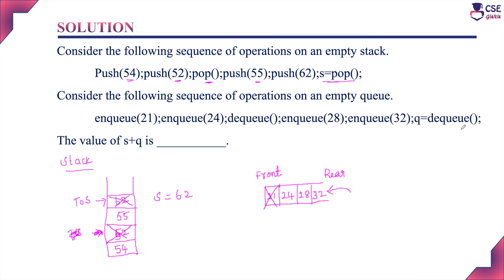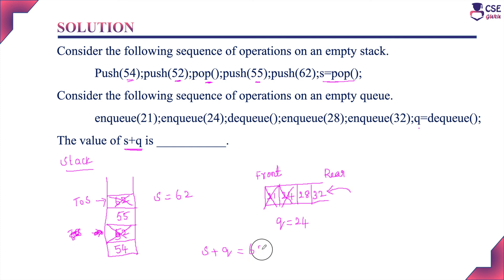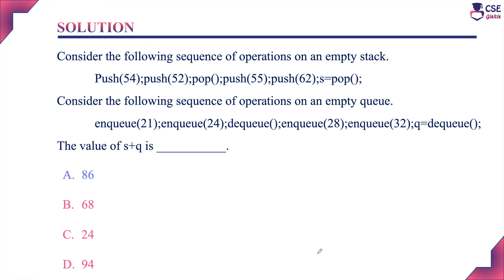Next DQ: among the remaining elements, the one entered first is 24, so 24 is deleted. Therefore Q equals 24. So S plus Q equals 62 plus 24, which is 86. The correct answer is option A: 86.